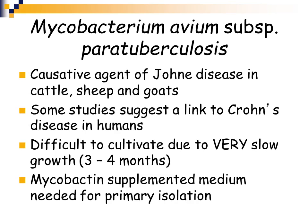No one has been able to definitively say that mycobacterium paratuberculosis causes Crohn's disease because this organism is incredibly difficult to grow. In individuals with Crohn's disease, mycobacterium paratuberculosis often cannot be cultured — either because they don't actually have it, or because it's so difficult to grow. Mycobacterium tuberculosis takes three to six weeks to see colonies, usually three to four weeks. With paratuberculosis it's three to four months, and you have to have mycobactin supplemented in the media to get this organism to grow from a patient sample.